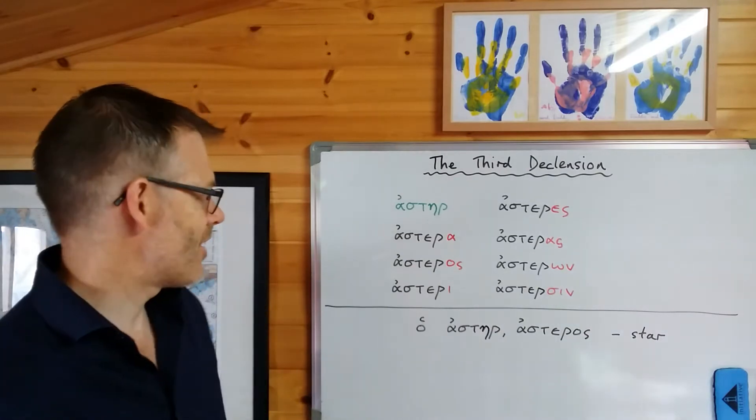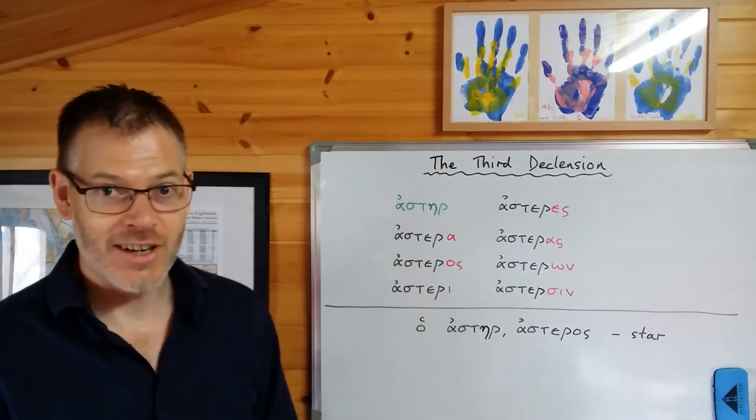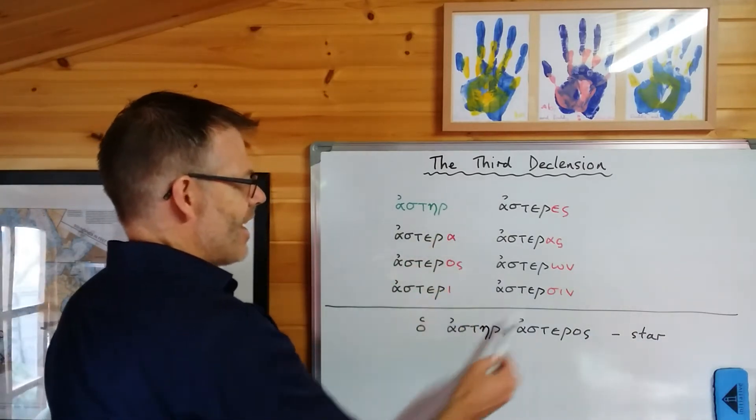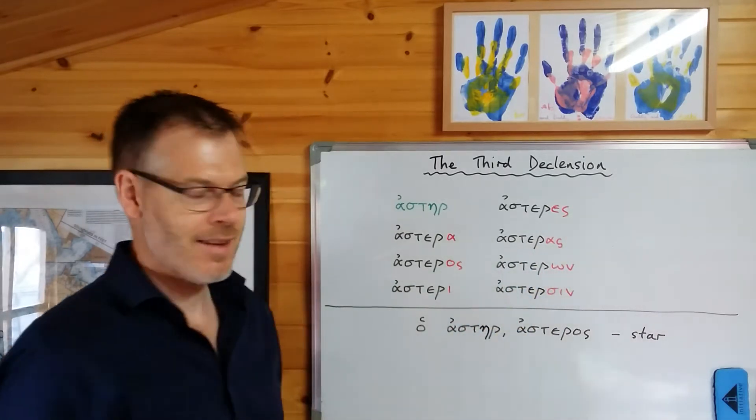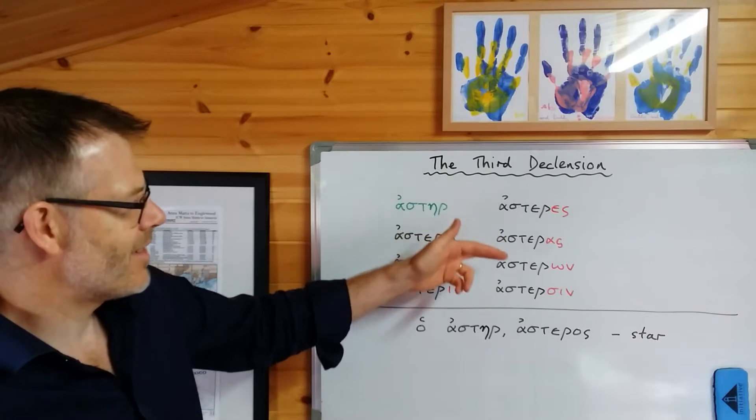Notice a few things to start with. First, I've highlighted the endings in red. These are the endings you've got to learn. I'll come to the nominative in a second. A, os, i, es, as, own, sin. Aster, asterat, asteros, asteri, asteres, asteras, asteron, astersin.